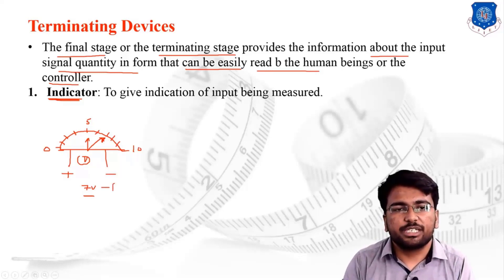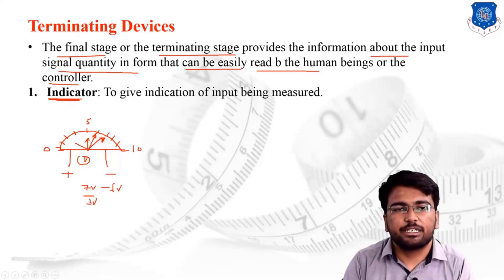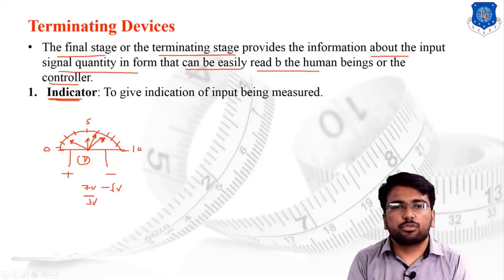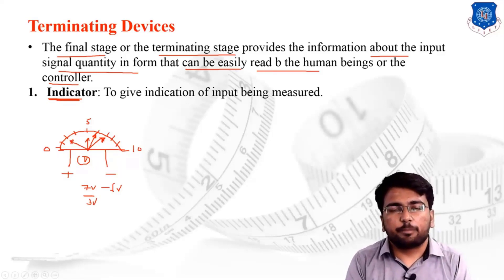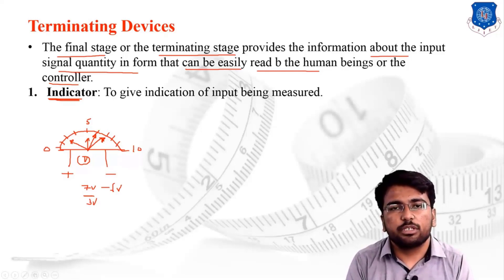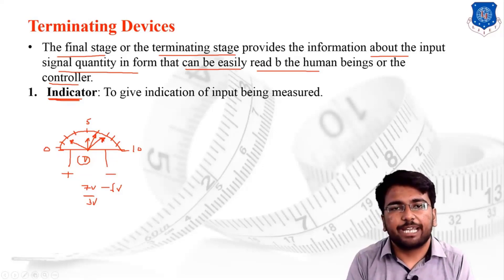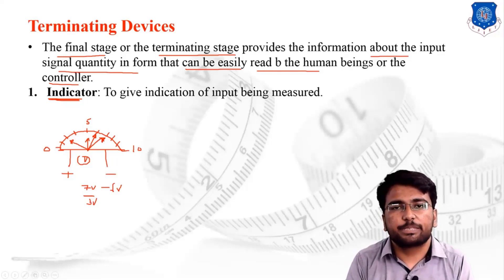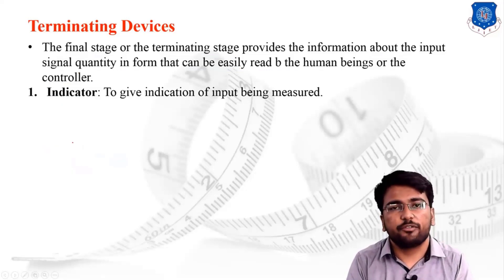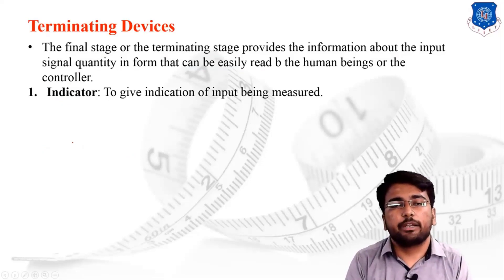If the voltage changes to 6 volts, the pointer will change its position to 6 volts. If it changes to 3 volts, the pointer will transiently move to 3 volts. So the indicator will show the value of the input in a transient form — at each and every fraction of time, the pointer will change its position and continuously indicate the input. If we need to find the value continuously, we use the indicator, but the indicator does not provide any kind of permanent record.